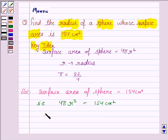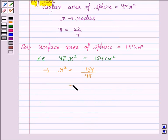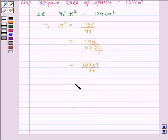This implies r² is equal to 154 upon 4π. That is, r² is equal to 154 upon 4 into π which is 22 upon 7. That is, 154 into 7 upon 88 and it is equal to 12.25.